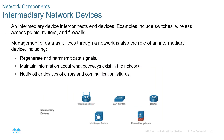Intermediary devices include switches, wireless access points, routers, and firewalls. They help manage the flow of data through the network. Part of that management includes generating and retransmitting data signals or electrical signals when necessary, maintaining information about pathways — how to deliver something from device A to device B — and notifying other devices if there are errors or issues, because a retransmission of data may be required.